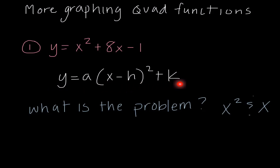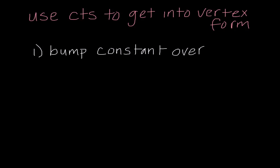This vertex form is the form we need in order to graph, so we need to figure out how to get back into vertex form. We are going to be using completing the square, which we learned in a previous lecture, in order to change these quadratic functions into vertex form. The way we're going to do it is slightly different than we learned last time.